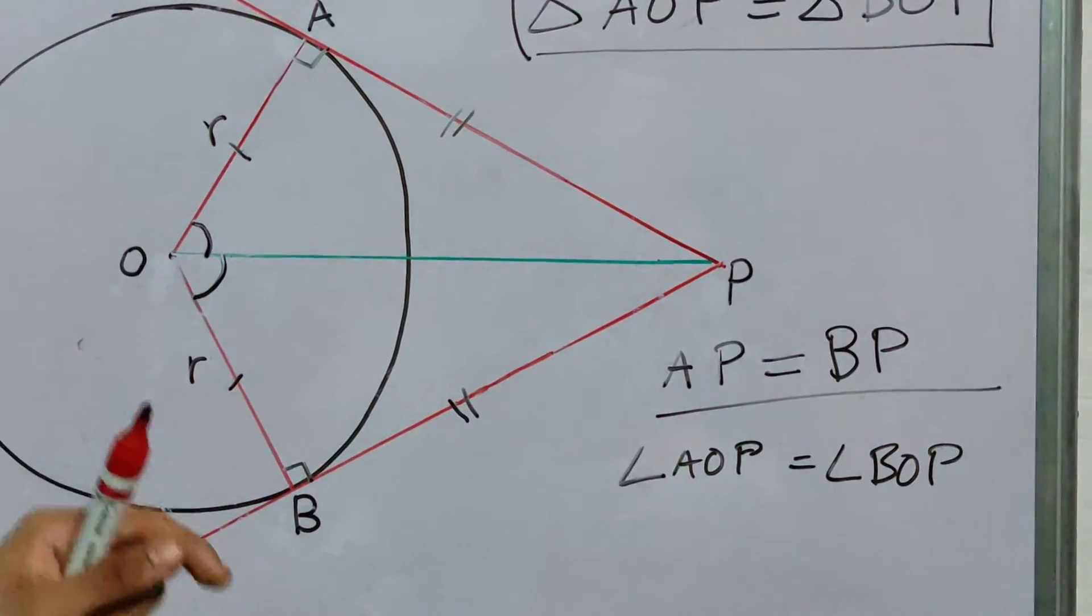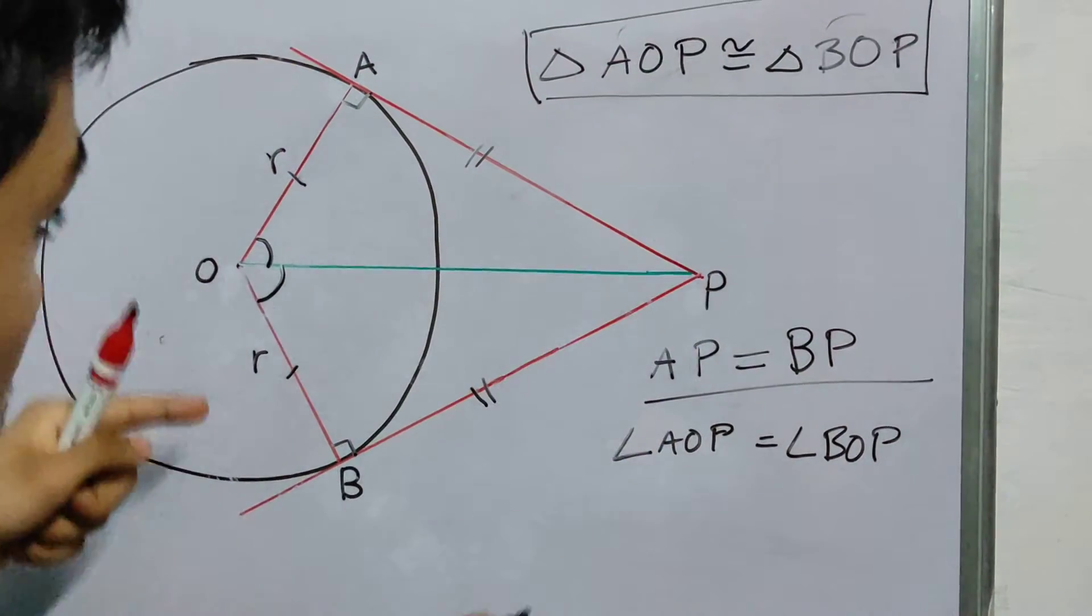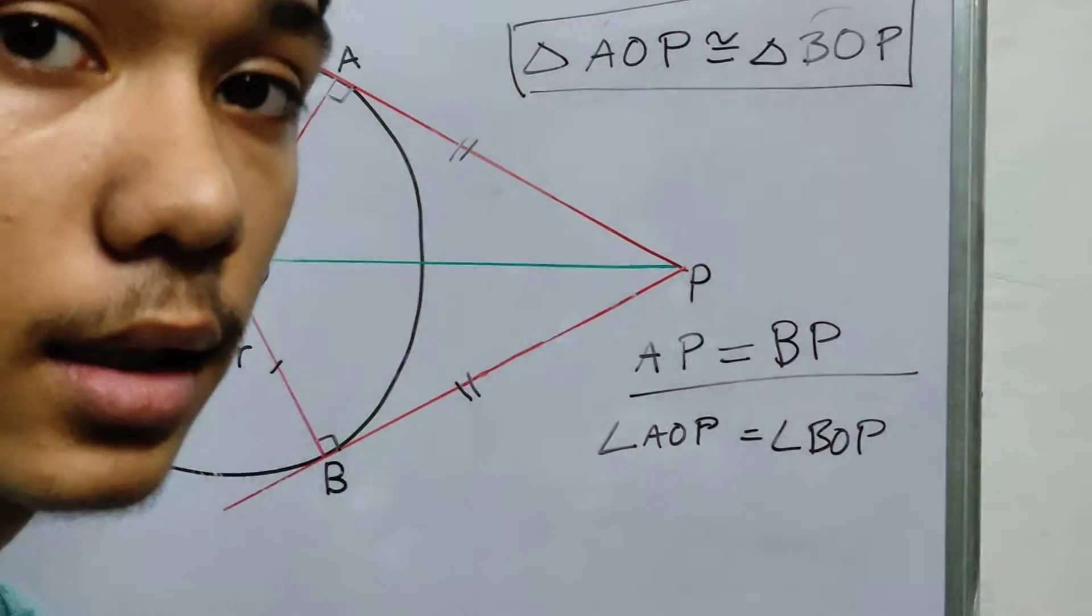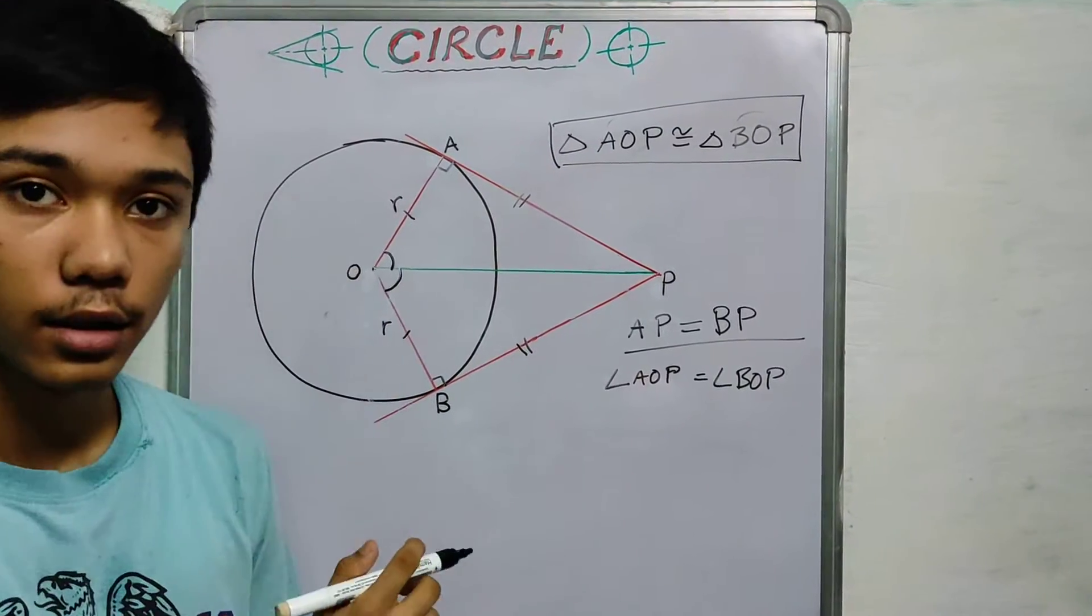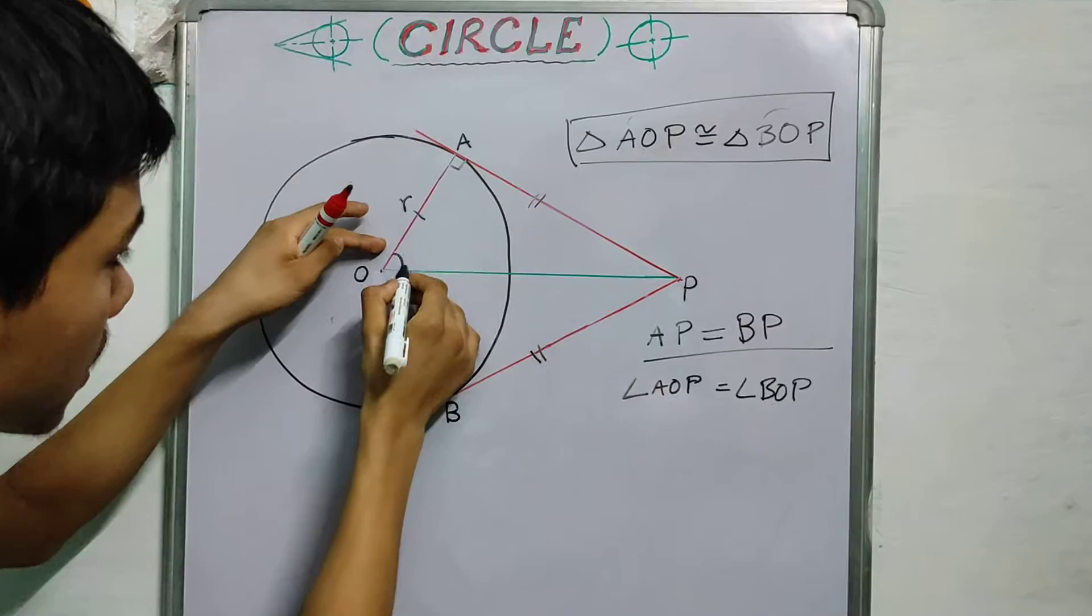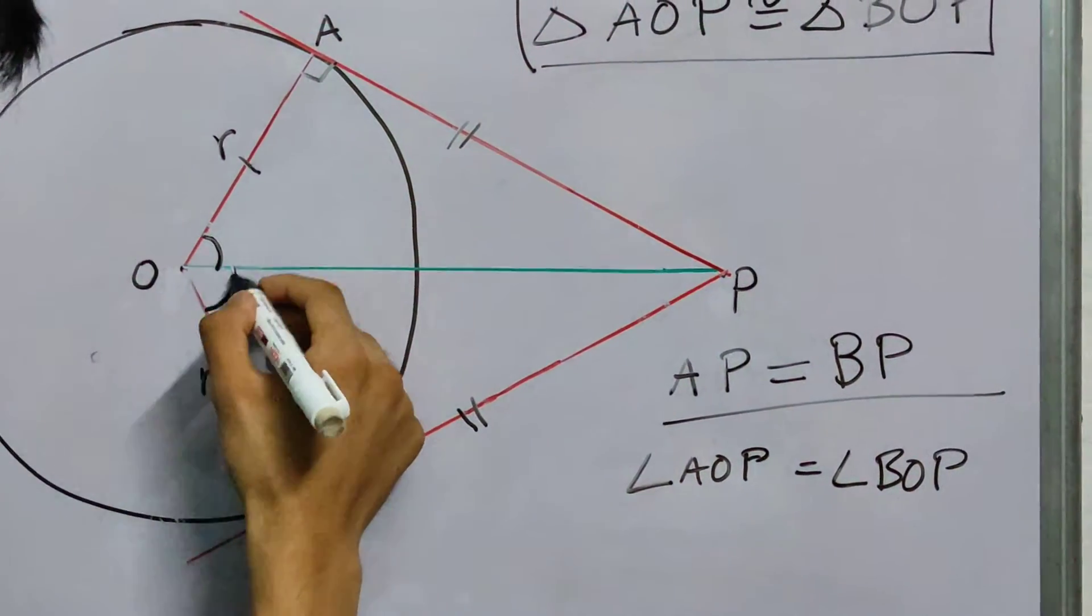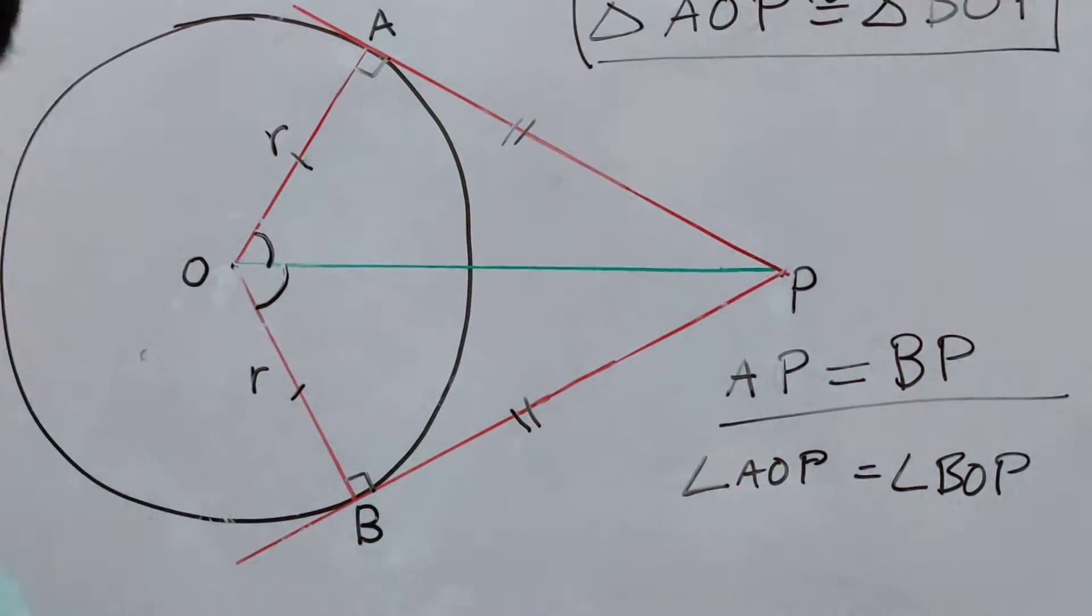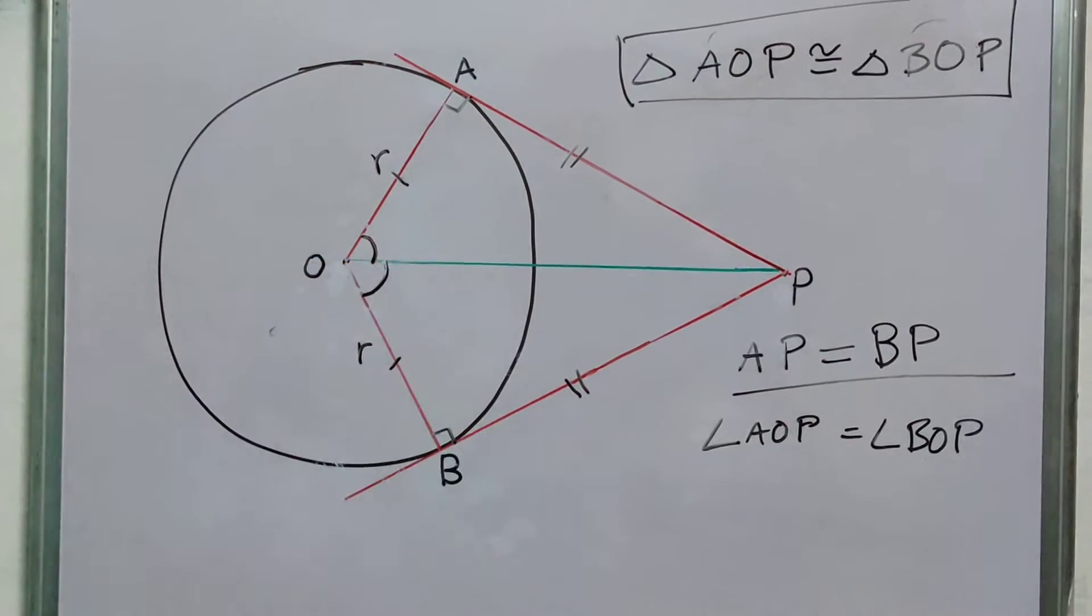Now, what does this tell us? That tangents drawn from a point subtend equal angles at the center. So if you have this tangent and you say, okay, this subtends this much angle and you have another tangent from the same point, both of them subtend equal angles right at the center. That's one way to think about it.